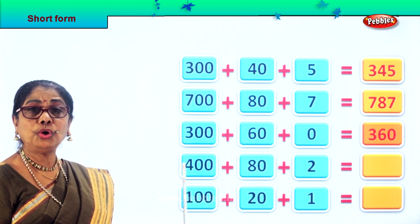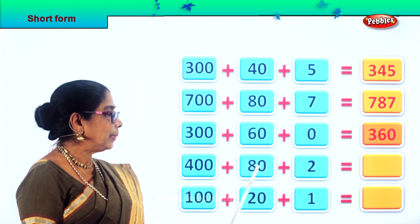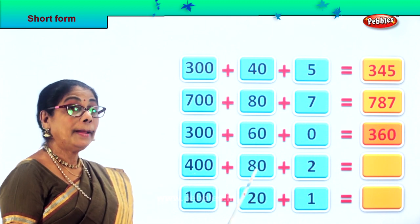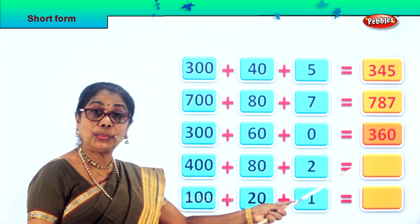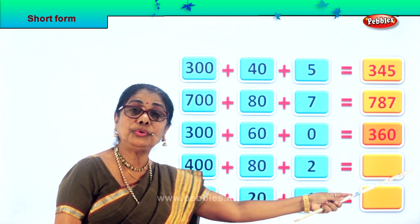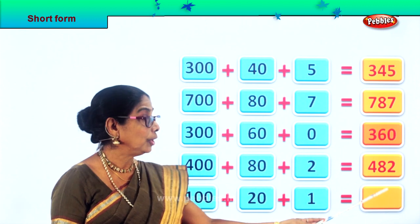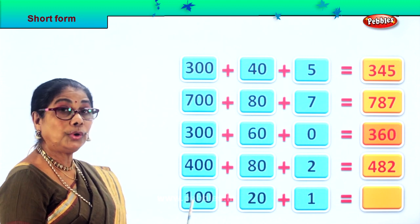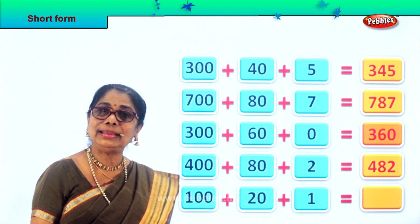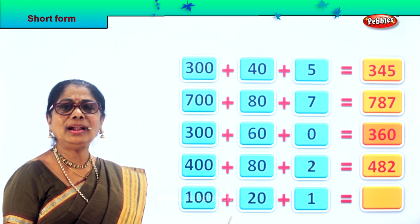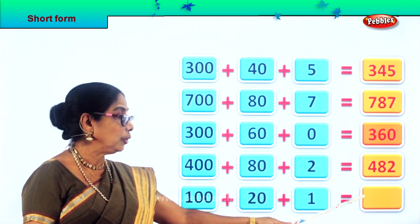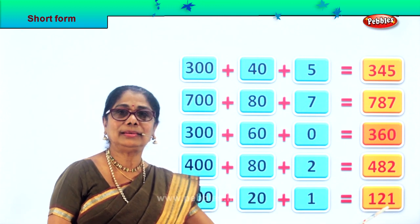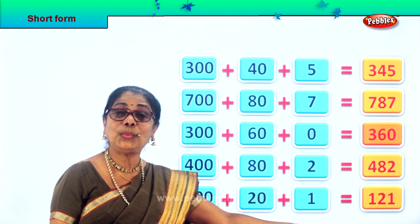What is the short form for 400 plus 80 plus 2? 400 plus 80 plus 2 is equal to 482. What is the short form for 100 plus 20 plus 1? 100 plus 20 plus 1 is equal to 121. Did you enjoy this exercise of doing short form?